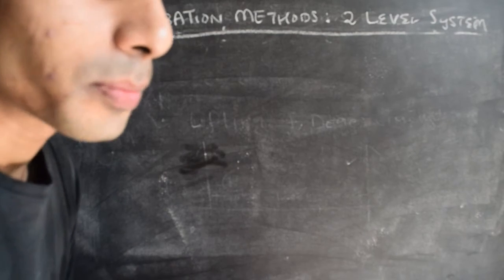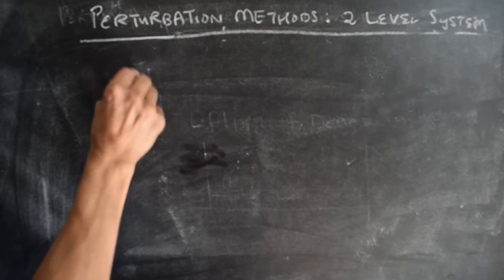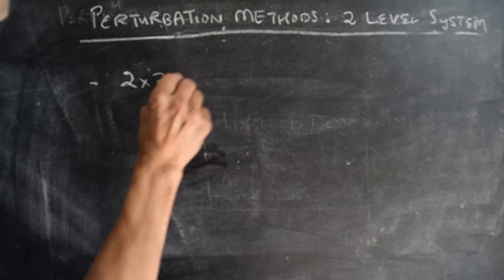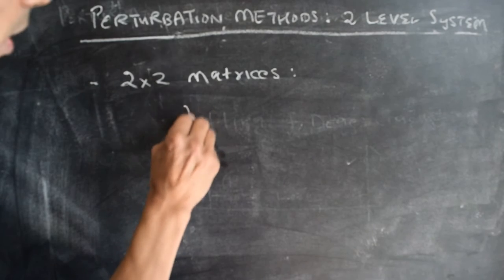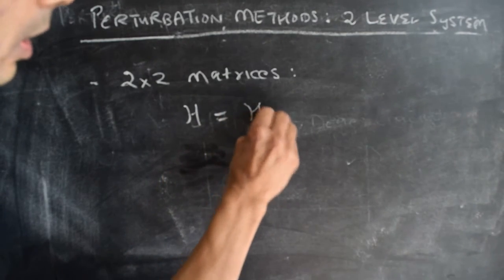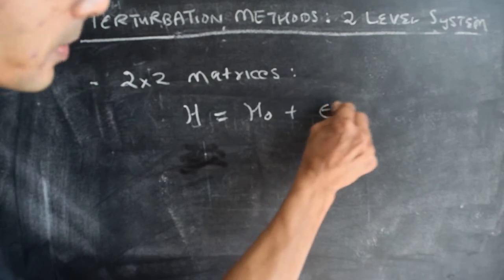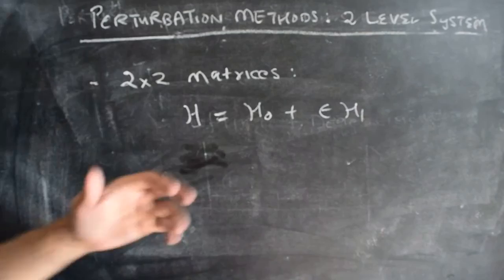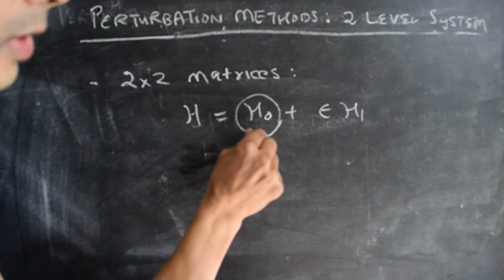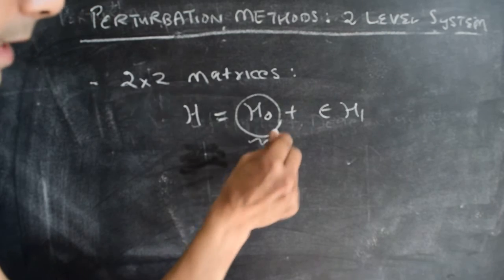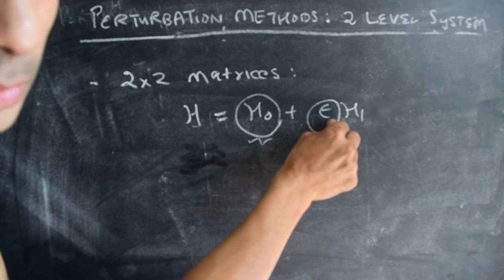To make these ideas a bit clearer, let's talk about 2x2 matrices of the form: you have a matrix H which is the sum of two matrices, H0 plus a perturbation parameter epsilon times H1. What we're interested in is what happens to the eigenvalues. So let's say we're able to solve for the eigenvalues of the unperturbed matrix H0, and then we want to find out what happens to the eigenvalues as we switch on the perturbation parameter epsilon.